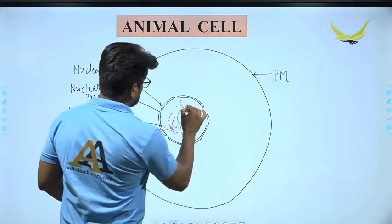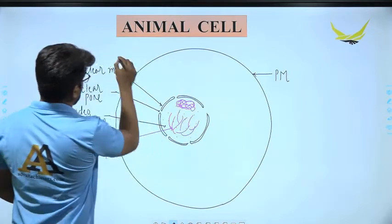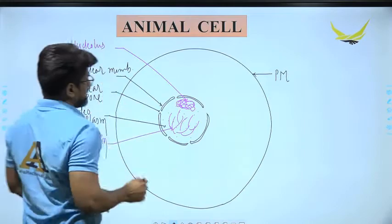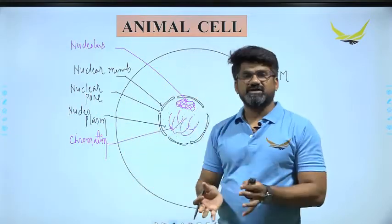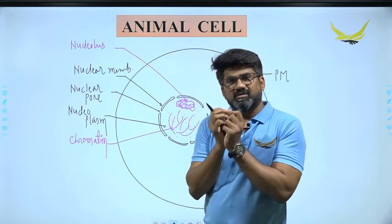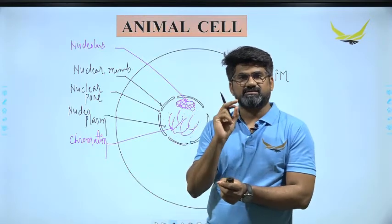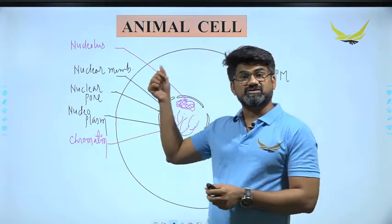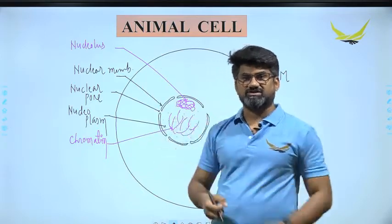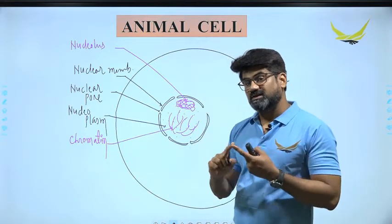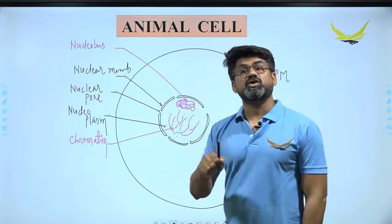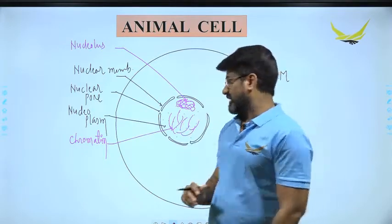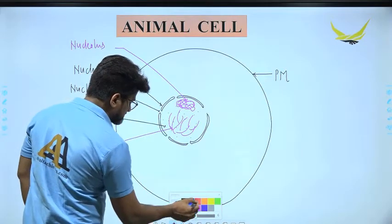There is a part where the genetic material is in dense form, and that part is called the nucleolus. The difference between the nucleus and nucleolus: when a cell is stained with a basic stain, there is a dark spot — that is the nucleus containing genetic material — and inside the nucleus there is again a darkly stained part called the nucleolus, formed at the NOR region. The nucleus is a membrane-bound structure, but the nucleolus is without a membrane.